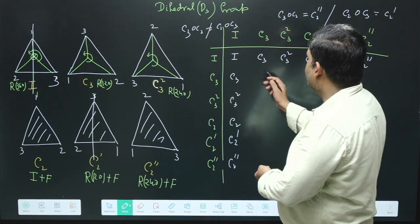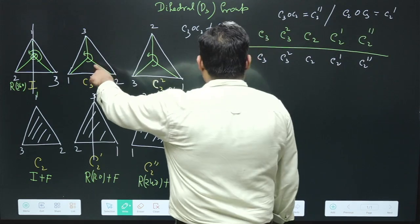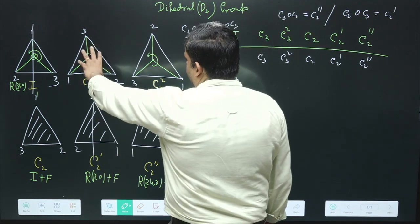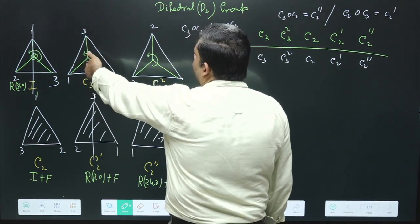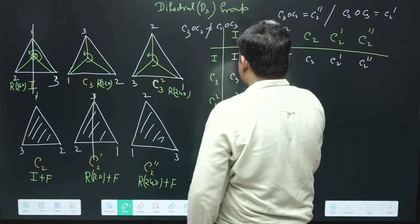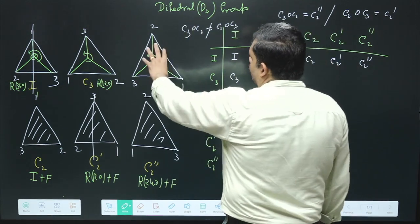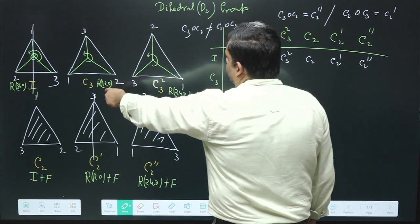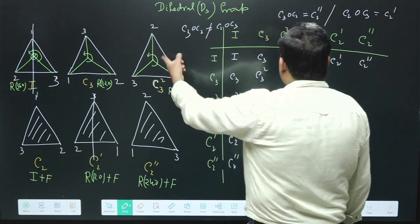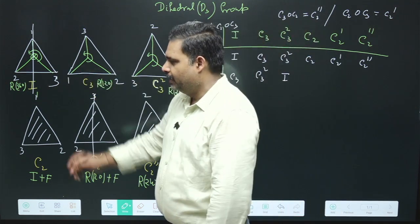Applying C3 to C3 means rotating 120 degrees twice, giving C3². Applying C3 again to C3² means rotating 120 degrees three times total, which returns to the identity configuration. Then, C2 composed with C3 means taking the C3 configuration and rotating it by 120 degrees, which sends corners 2 and 1 to new positions, giving C2''.